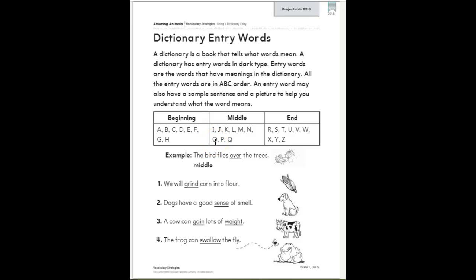All right, let's do some more examples and see if we can figure out where that would go. We will grind corn into flour. Grind is our entry word. Grind starts with the letter G. Where would I find G? The beginning, the middle, or the end of the alphabet and the dictionary? Right, I would find that in the beginning of the dictionary.